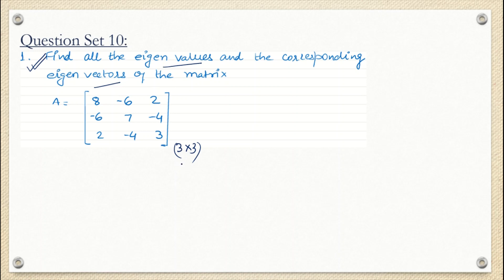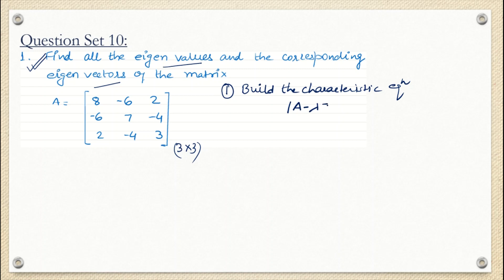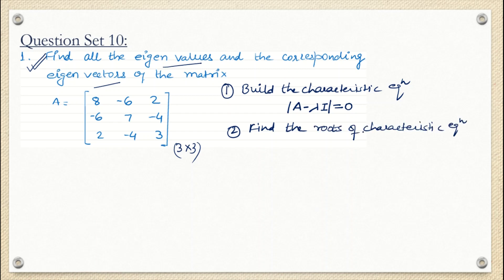The first step is to build the characteristic equation. Using this given matrix, the characteristic equation is: determinant of (A minus λI) equals 0. We will then find the roots of this characteristic equation. The roots — that is λ — are the eigenvalues of the given matrix.